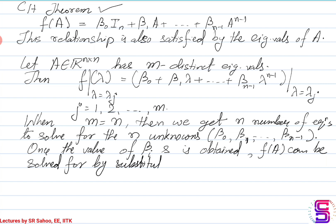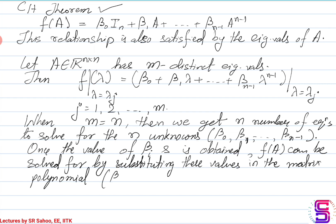Therefore, by substituting these values in the matrix polynomial — which is beta_0 times I_n plus beta_1 A, till beta_{n-1} A^{n-1} — we obtain F(A).